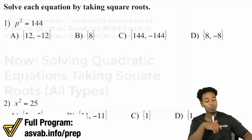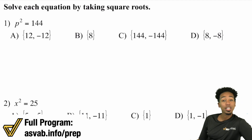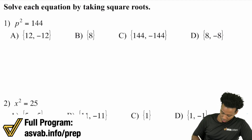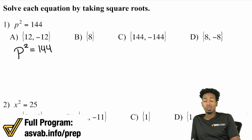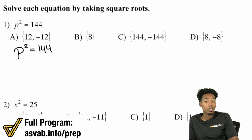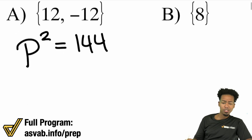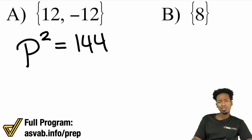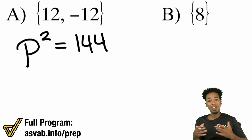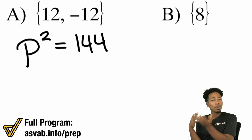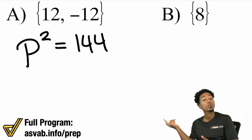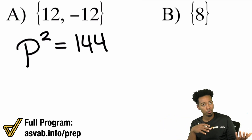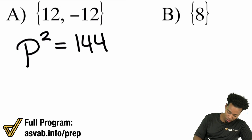Let's get started with number one. We have p squared equals 144. Here's what we're going to do. Remember, solving equations is the art of working backwards. Looking at p squared equals 144, what's the only thing stopping us from figuring out what p is? We have a p squared term but no p term, so there's no factoring needed. We can solve this straight up by taking the square root of both sides — the opposite of squaring is square root.